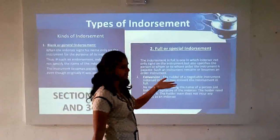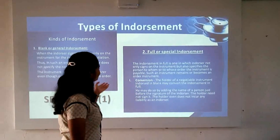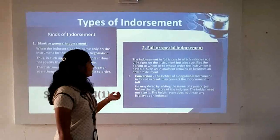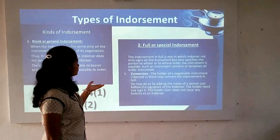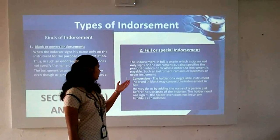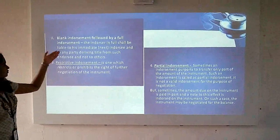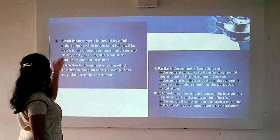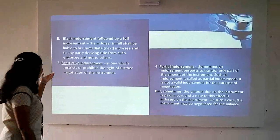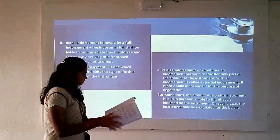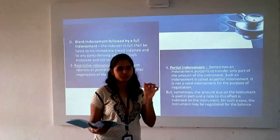The second type of endorsement is full or special endorsement. An endorsement in full is one in which the endorser not only signs the instrument but also specifies the person to whom or to whose order the instrument is payable. Such an instrument remains or becomes an order instrument. Section 34, subsection 2 explains that a special endorsement specifies the person to whom or to whose order the bill is to be payable.